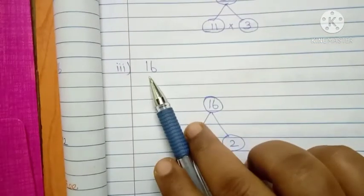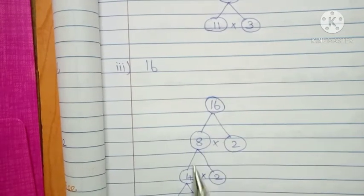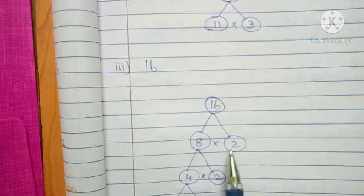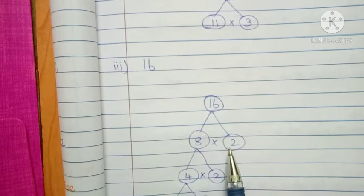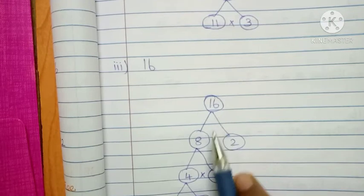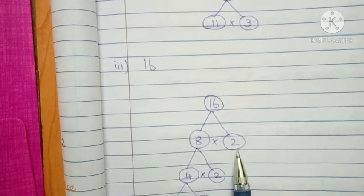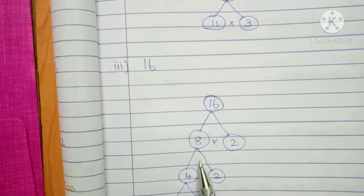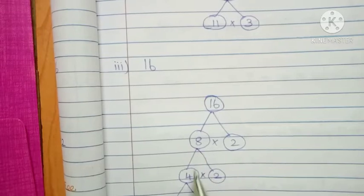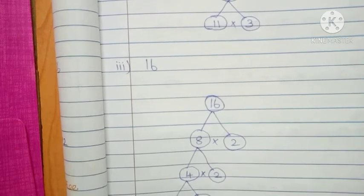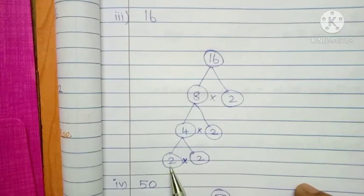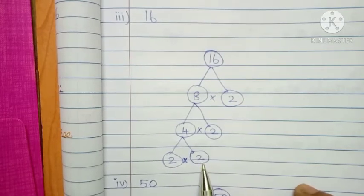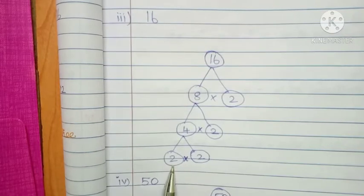The next one, number 16. Take 16 here. Write the big number on one side, small number on the other side. 8, 2's are 16 or 2, 8's are 16 — 2 table or 8 table. Write big number on the left hand side, small number on the right hand side. Then 8 is taken for 4: 4, 2's are 8. Write 4 here and 2 on the right hand side. Then 4 is coming for 2 table: 2, 2's are 4. Up to 2 table, you complete this factor tree.